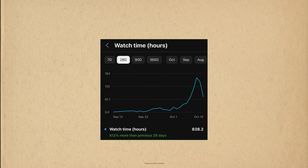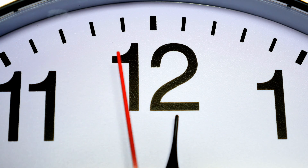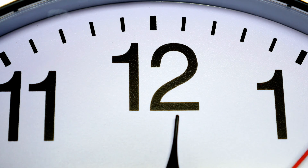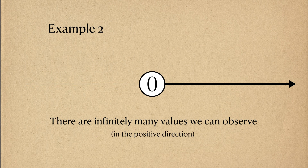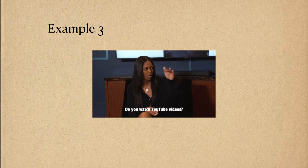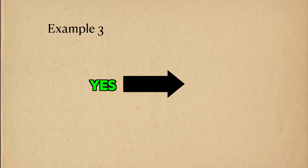As a second example, let's say the thing I want to observe is the hours of watch time that this YouTube channel gets in a day. Hours is a measure of time, so the range of possible values is, theoretically, infinite — but only infinite in the positive direction. As a final example, let's say that the thing I want to observe is whether or not you finished this YouTube video. Since I know you will, the only value this random variable can take is 1, which is the number I used to represent that idea.